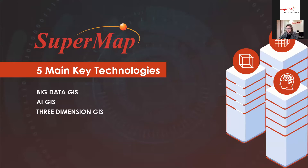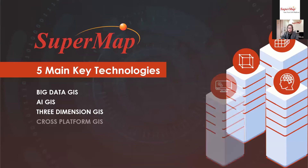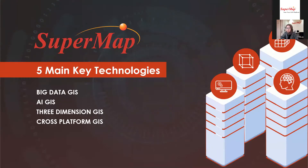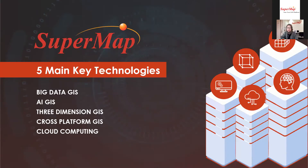The third is 3D GIS — SuperMap developed its 3D modeling function from 2009 by integrating technologies such as the data model, construction, spatial analysis, and software platform. The fourth is cross-platform GIS — not only Windows, SuperMap is also able to run on Linux. The fifth is cloud computing — since 2013, SuperMap has been able to do GIS processing using cloud technology, allowing computing services including servers, storage, databases, networking, and software.